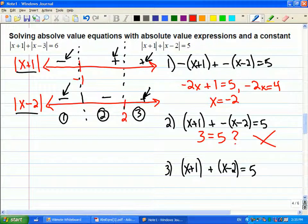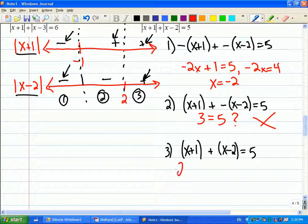And then in this one here, if I add them up, I get 2x minus 1 equals 5. So 2x equals 6. And x is equal to 3. So here are the two possibilities that I'm going to check. Negative 2 and positive 3.